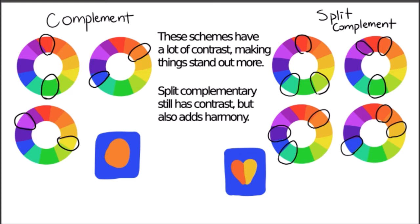Split complementary is almost complementary, but instead of choosing the color directly opposite, it's the two colors on the left and on the right of that color. So instead of being red and green, it would be red with bluish-green and yellow-green.